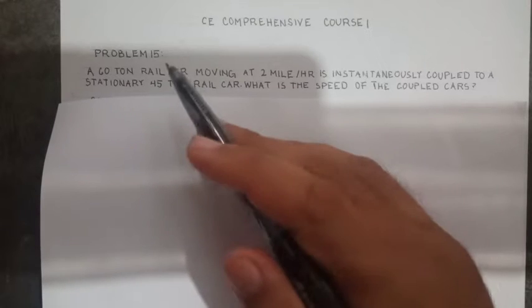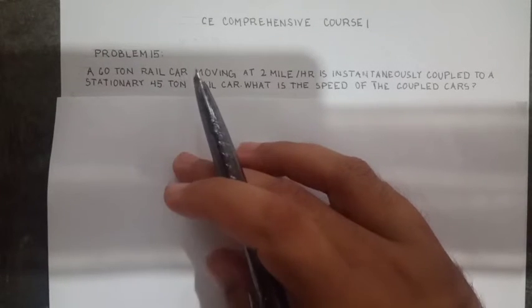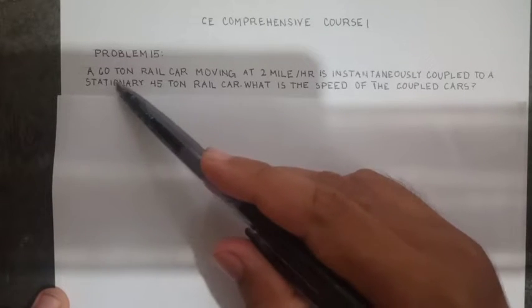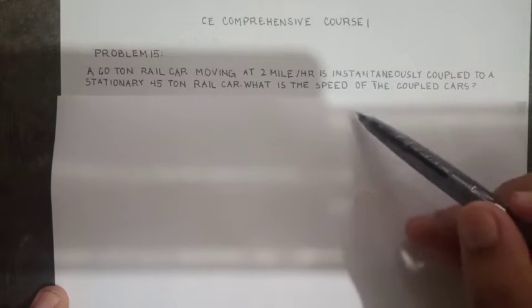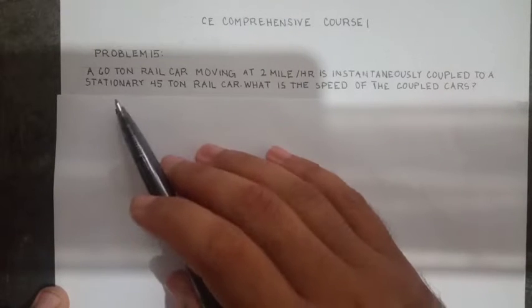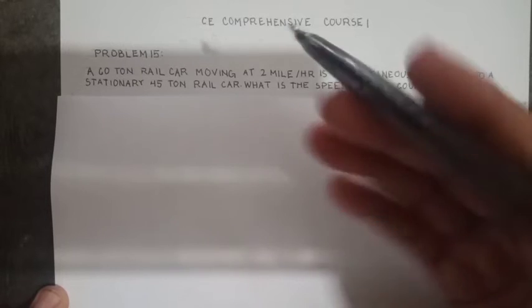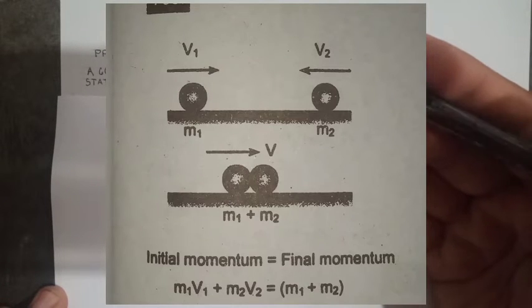So this is another problem about momentum from the engineering books. A 60-ton rail car moving at 2 miles per hour is instantaneously coupled to a stationary 45-ton rail car. What is the speed of the coupled cars? The formula we'll use is the momentum equation.